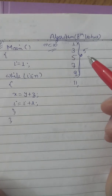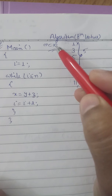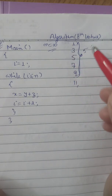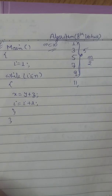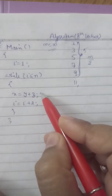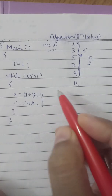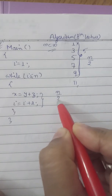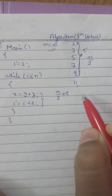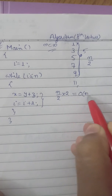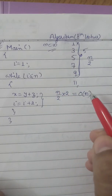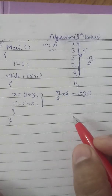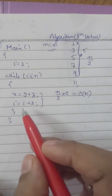We can clearly see that if n equals 10, it executes 5 times, so we can say it runs n/2 times. We have two statements inside the loop, so n/2 multiplied by 2 gives order of n. The time complexity for this program is O(n).